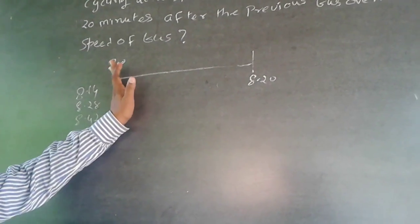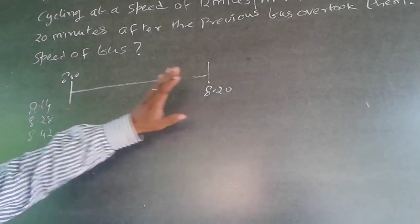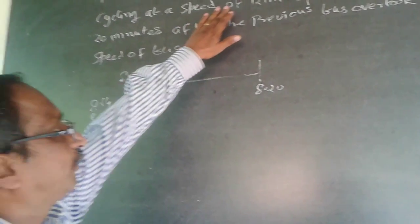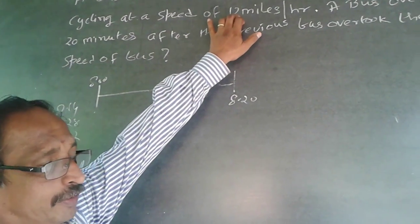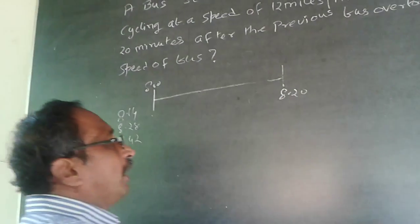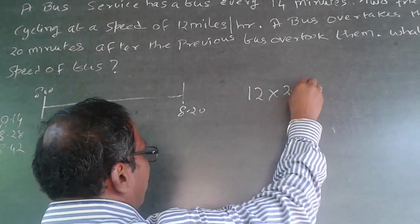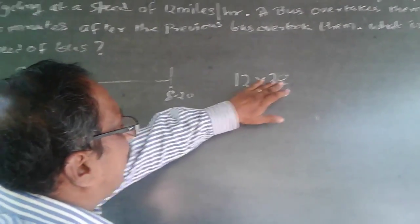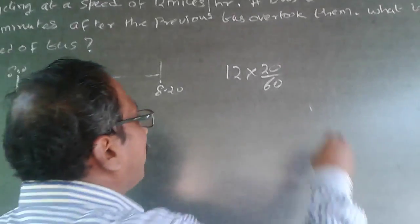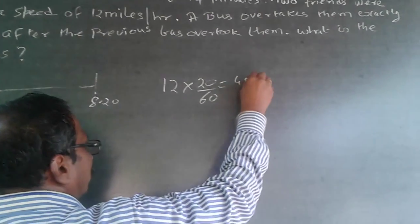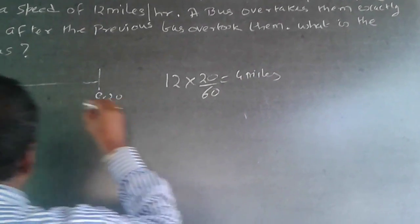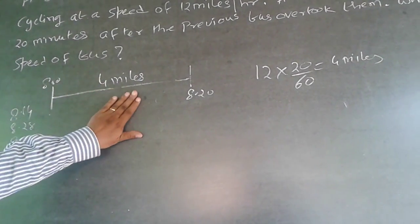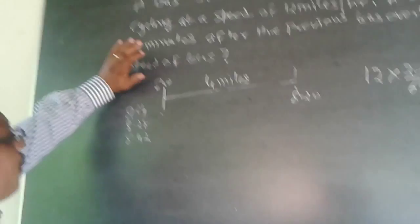I have to find the distance traveled by the friends by cycling. The speed of the friends is given as 12 miles per hour. In 20 minutes, the distance covered will be 12 × (20/60) = 4 miles. So this distance is 4 miles.